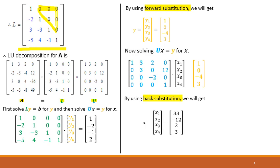We will first solve LY equal to B for Y, and then solve UX equal to Y for X. For LY equal to B, we have the lower triangular matrix L, the matrix Y containing Y1, Y2, Y3, and Y4, and matrix B given in the system of linear equations. By using forward substitution, we get the values Y1, Y2, Y3, and Y4 equal to 1, 0, minus 4, and 3 respectively.